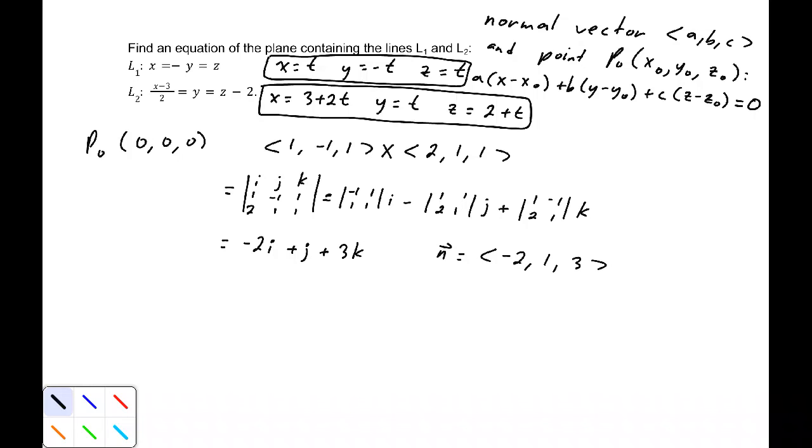Putting that together with what we know about the equation of a plane given a point and a normal vector, we can write this as -2x + y + 3z = 0, because our point was the origin (0, 0, 0).